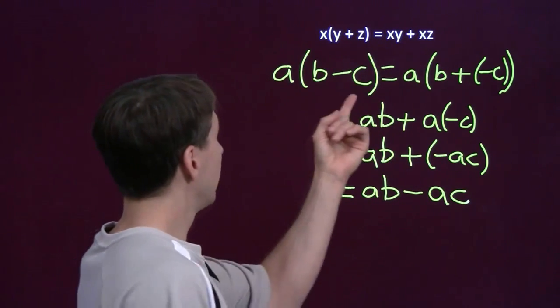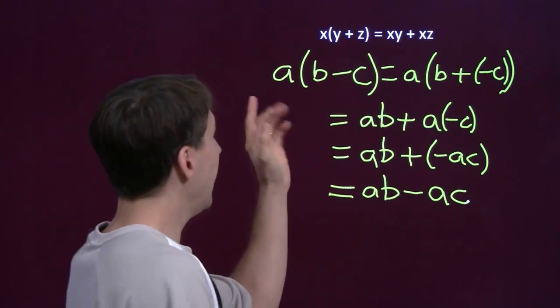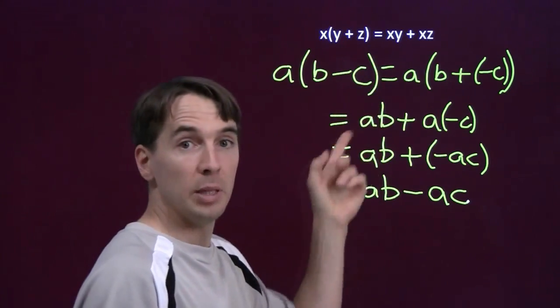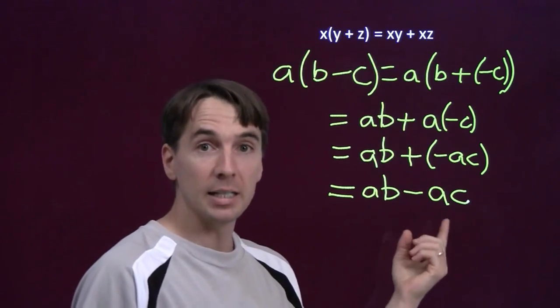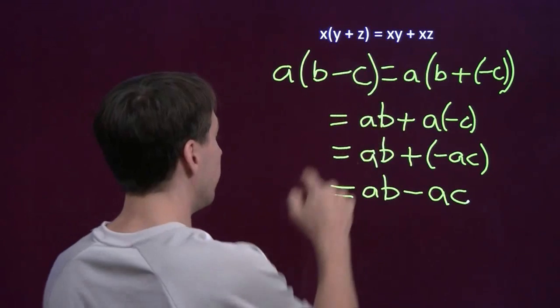And sure enough, multiplication distributes over subtraction just like it distributes over addition. A times the whole quantity b minus c is a times b minus a times c. Now, of course, because multiplication is commutative, we can switch the order of these.